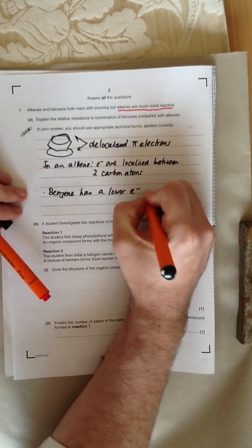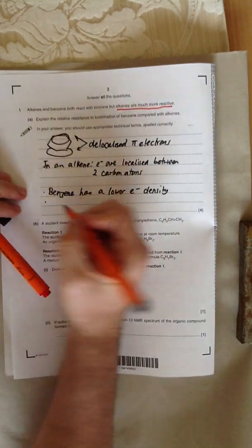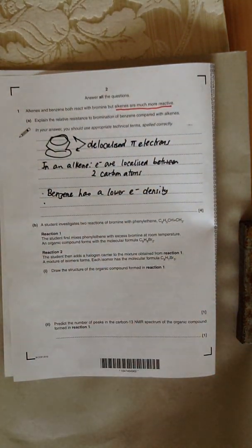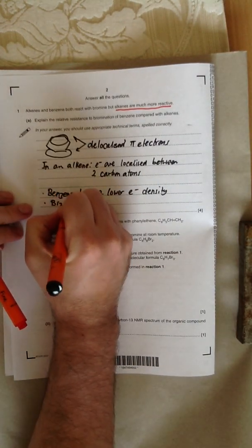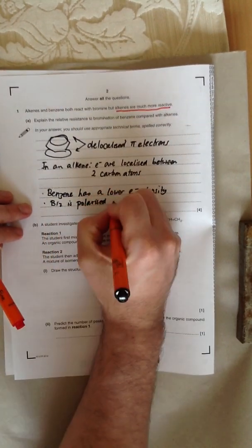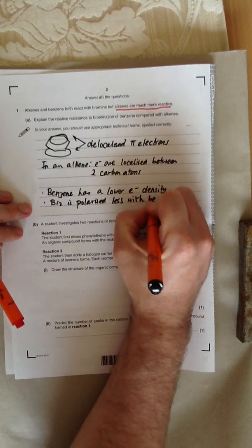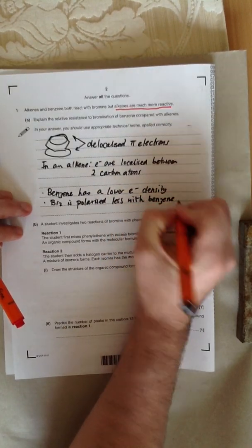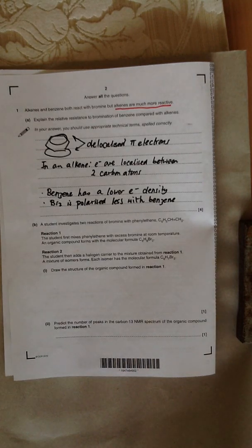This means that benzene has a lower electron density. What does that mean? It means that the electrophile, the Br2, is polarized less in benzene when it attacks benzene. The Br2 is polarized less with benzene. Because it's polarized less, it means the benzene reacts slower than with an alkene.